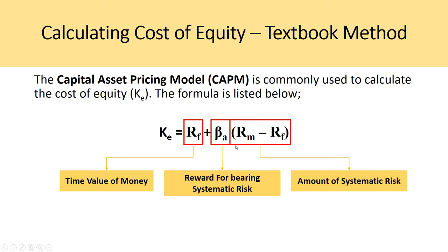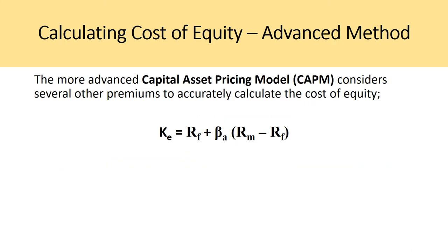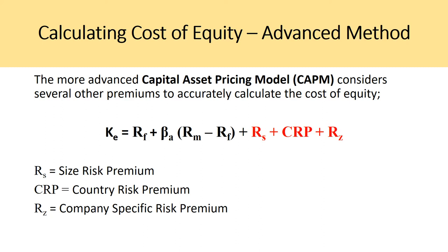In the CAPM formula, the risk-free rate represents the time value of money. Beta is a measure of systematic risk and reflects the reward for bearing systematic risk relative to the market. The market risk premium — the difference between expected market return and the risk-free rate — represents the amount of additional return received based on systematic risk taken on. We're now going to look at three additional premiums beyond the standard CAPM.